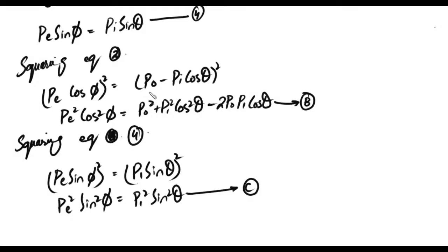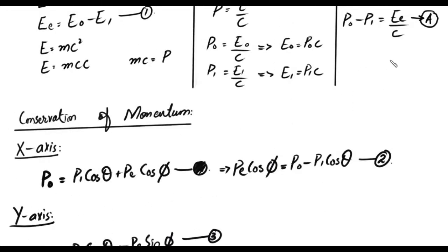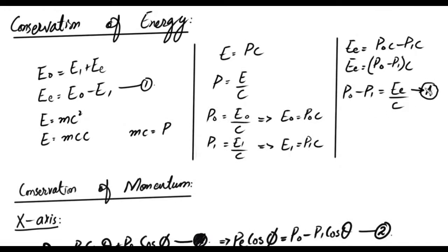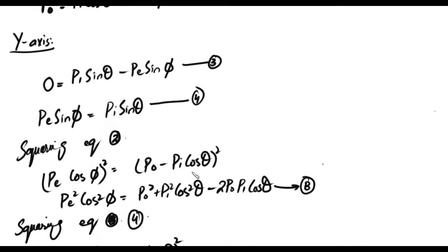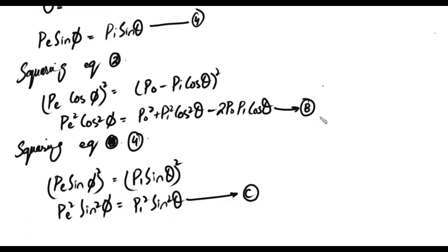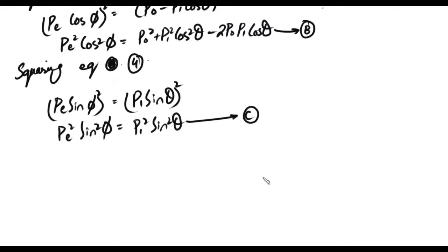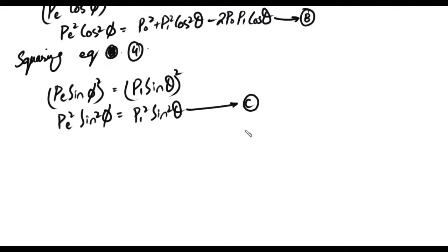Welcome to MedPhysics Compton Effect Part 2. In Part 1, we derived equation A, equation B, and equation C. These three equations have been established. Equation A covers momentum changes, and then we have momentum conservation — the x and y equations — giving us equations B and C. Now our second part starts.